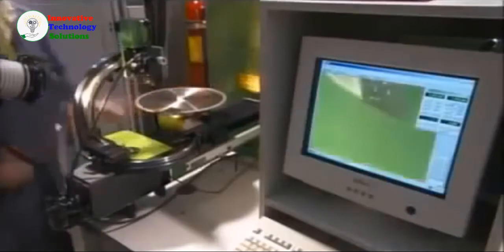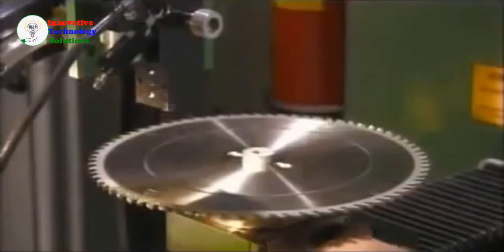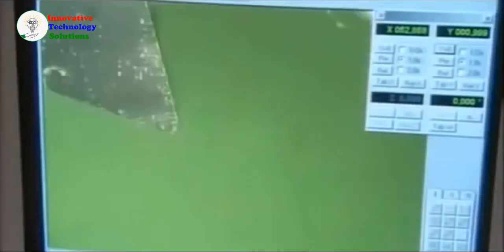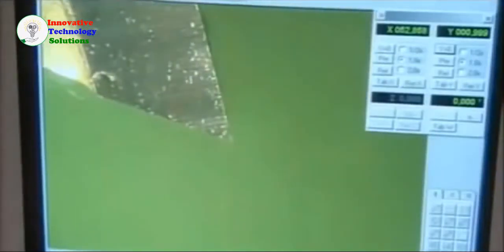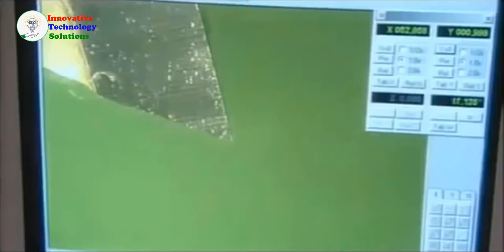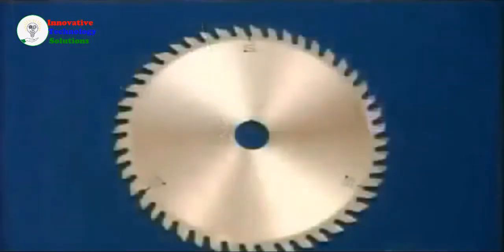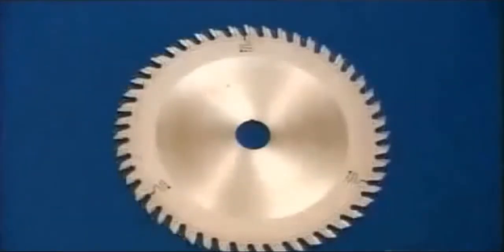Now this circular saw blade is ready for its close-up. A camera focuses on the teeth and sends the picture to a computer. It analyzes the cutting angle and the clearance of each tooth to make sure each one measures up. The result is circular saw blades.